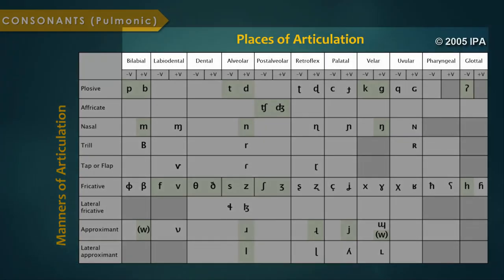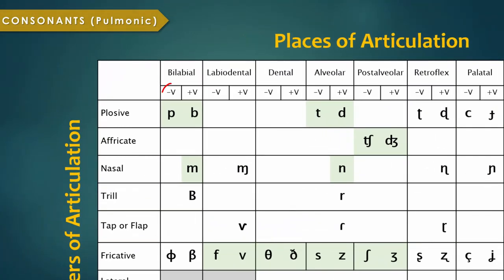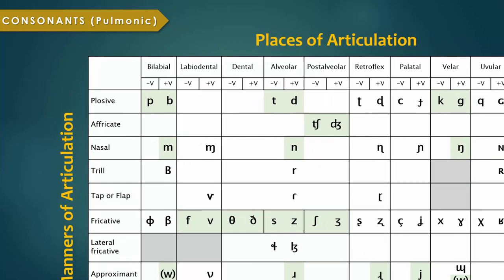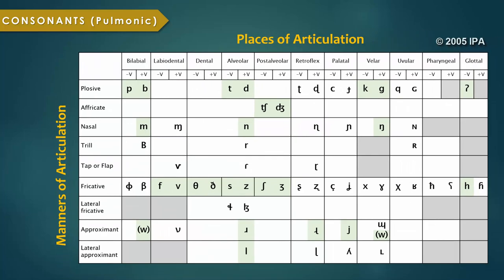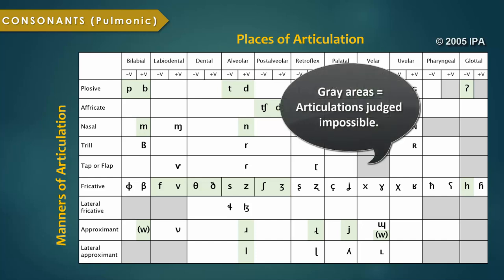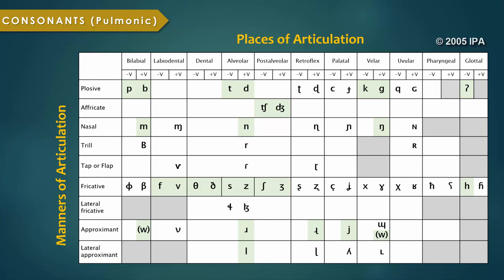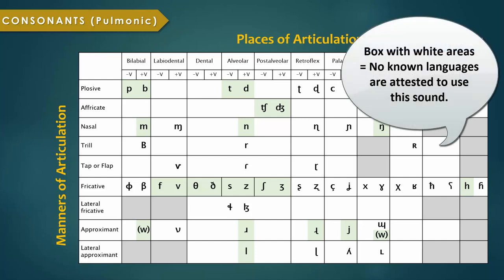Within each of the boxes, IPA symbols representing voiceless sounds are placed to the left, and symbols representing voiced sounds are placed to the right. You may also notice that some boxes are empty, with either white or gray space. If it's gray space, it actually means that those sounds are judged anatomically impossible to produce, whereas the boxes with just white space mean that there are no known languages that are attested to use that sound.